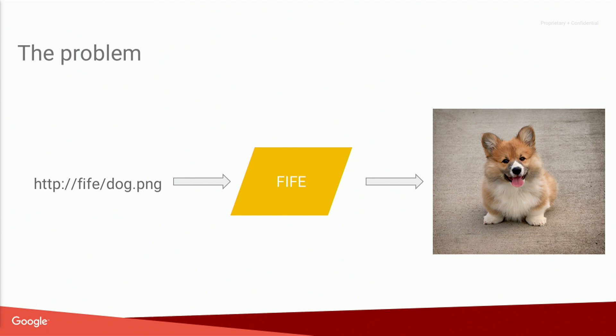The API for the service is fairly simple — it receives a URL of some image, does some processing, and returns the actual image. Naively, you could just take all those requests together, measure the error rate, put some target on that, measure latency, add a couple of targets, and you're done. But as we looked into it, we realized there had been a few previous attempts to set up an SLO for the service, and none of them actually succeeded. So it wasn't as easy as we thought.